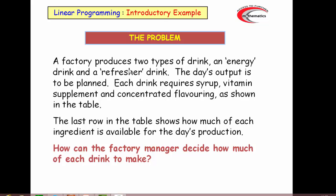You can see here that a factory is trying to make two different types of drink, an energy drink and a refresher drink, planning the day's output. Each drink requires syrup, vitamin supplement and concentrated flavouring. A table will show the amounts available and the amounts required of those, which we'll look at on the next slide.